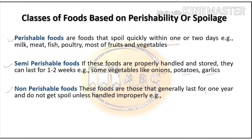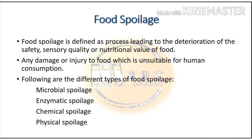Third is non-perishable food items — these are foods that generally last for one year and do not get spoiled unless handled improperly. For example, grains like wheat, rice, and pulses come under this category. Food spoilage is defined as a process leading to the deterioration of the safety, sensory quality, or nutritional value of food.